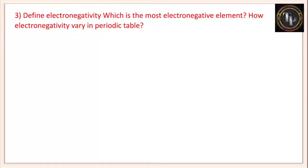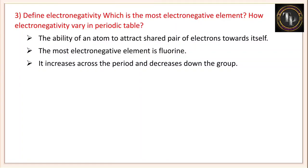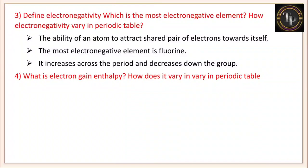Define electronegativity. Which is the most electronegative element? How does electronegativity vary in the periodic table? Electronegativity is the ability of an atom to attract a shared pair of electrons towards itself. The most electronegative element is fluorine. It increases across the period because as you move left to right, size decreases and nuclear attractive power increases. It decreases down the group because size increases and attractive power decreases.